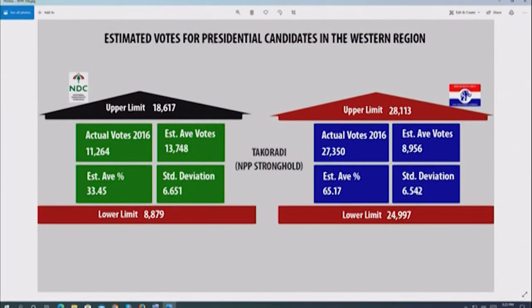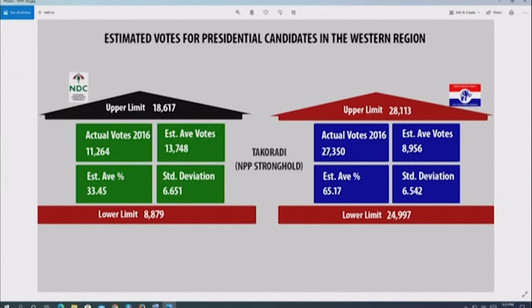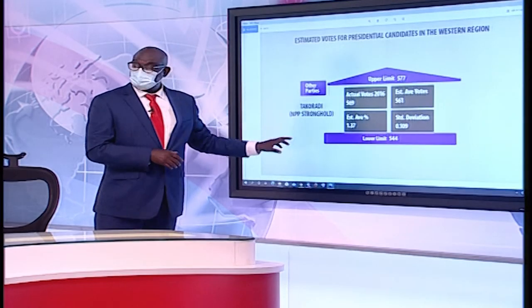In Takoradi, NPP's estimated vote was 8,956, but they actually had 27,000 — almost 20,000 more than estimated. NDC's estimated votes were 13,000, but they only had about 11,000, dropping votes here as well. NPP clearly worked hard in their stronghold of Takoradi.